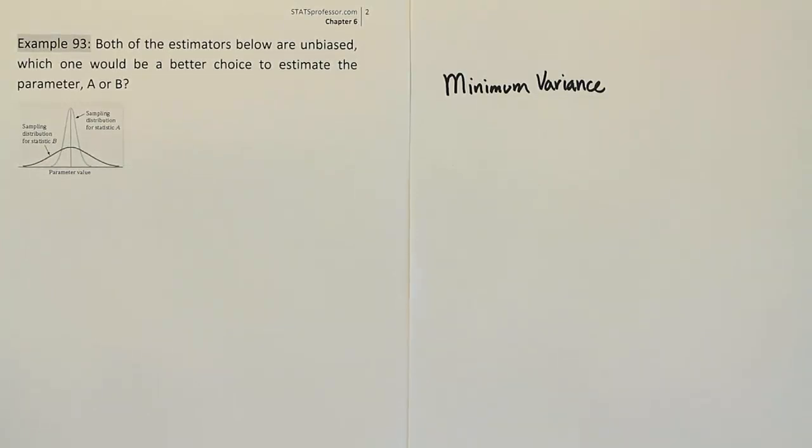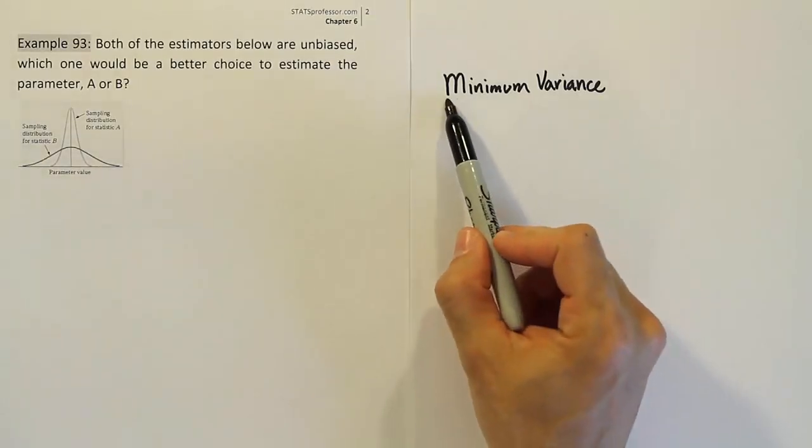So, of course, most times we're not going to be able to get an estimator with zero variance. If we got that, it would mean that we know the precise value of the parameter all the time. Every time we do an estimate of it, we get it right. So, that wouldn't make much sense.